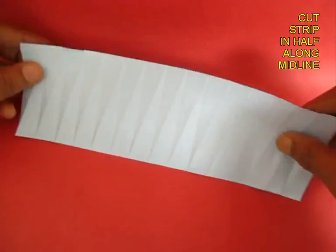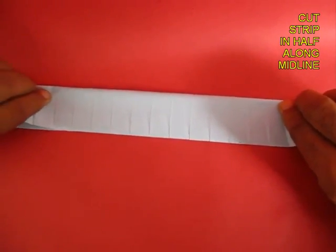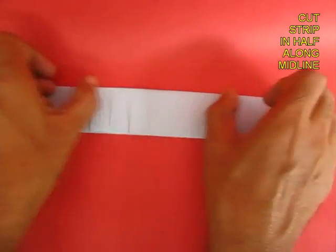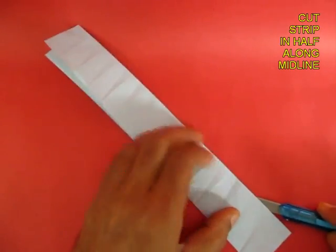Now open the paper, fold it in half along the midline and cut the strip in half. First crease it well, then with a pen knife cut it in half.